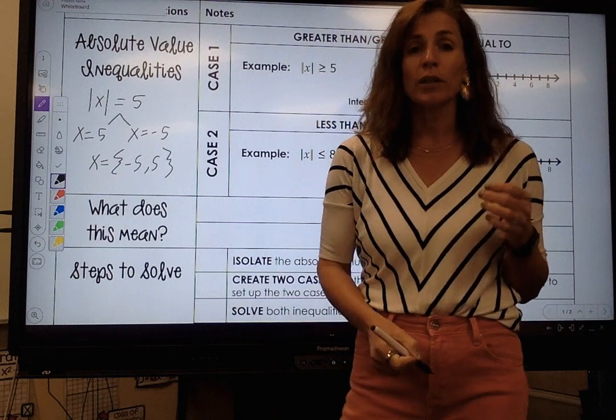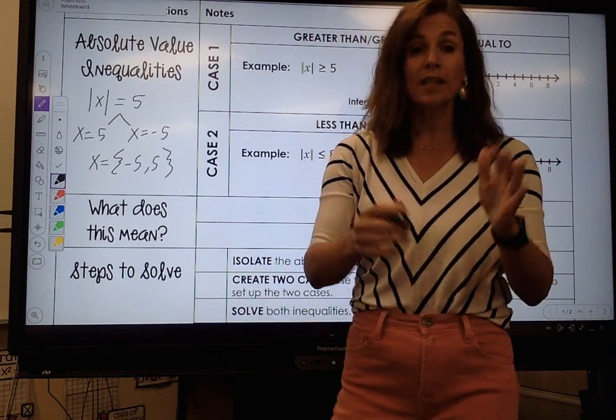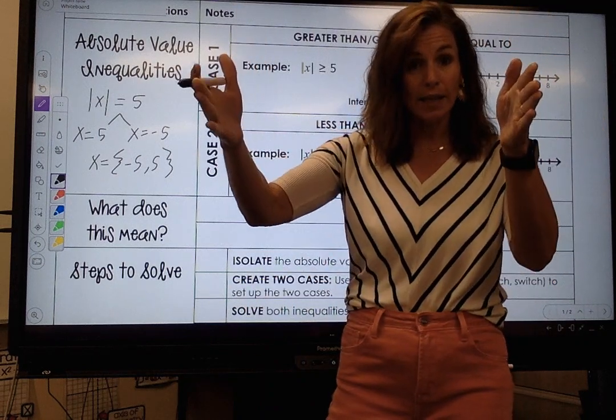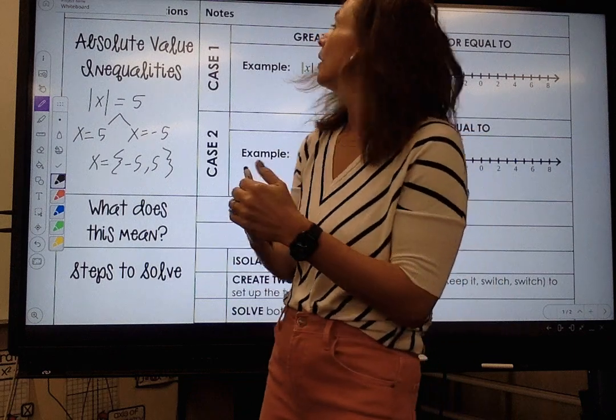Absolute value inequalities are very, very similar. We still have to isolate and we're still going to branch.